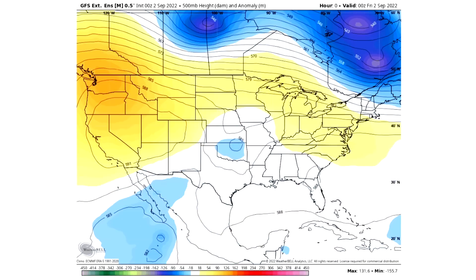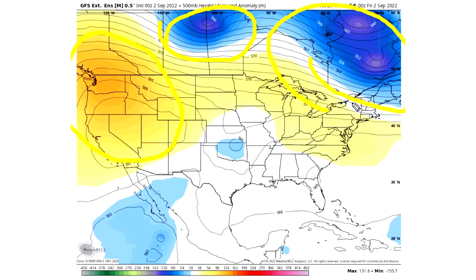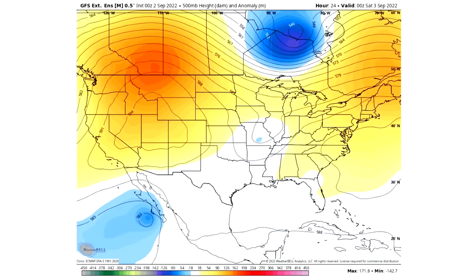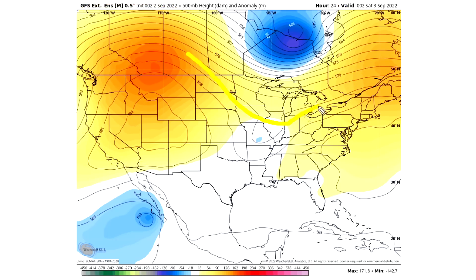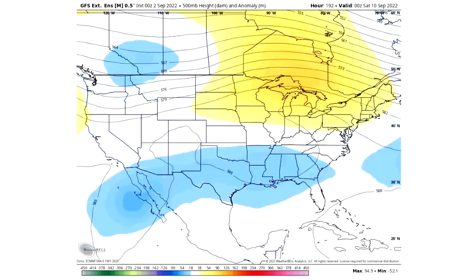Now let's talk about our air masses — troughs and ridges primarily. The yellow and orange regions are going to be our ridges, and these blue regions dipping down are going to be our troughs where cold air can be anticipated. We can see already today a ridge out west, a bit of a ridge offshore of the United States, and then some colder air set up in between — kind of a mini trough, not anything too crazy, but definitely more of a trough look.